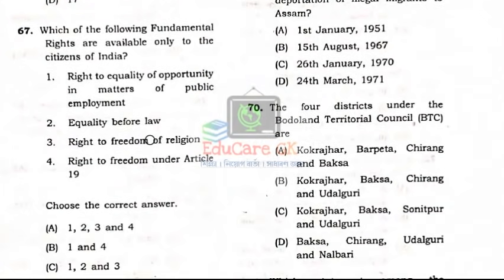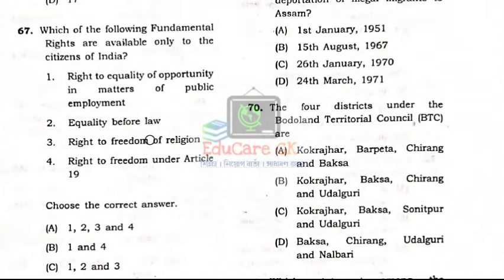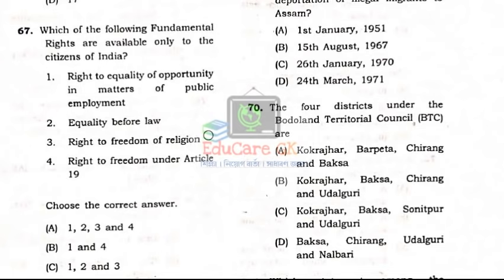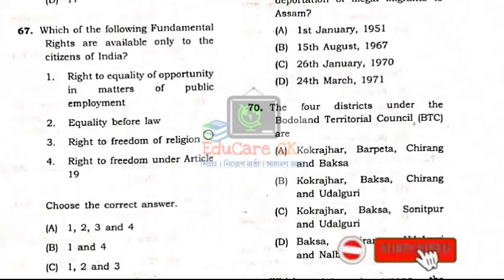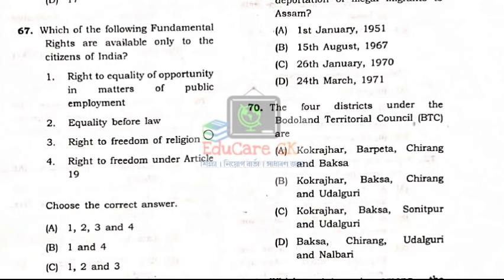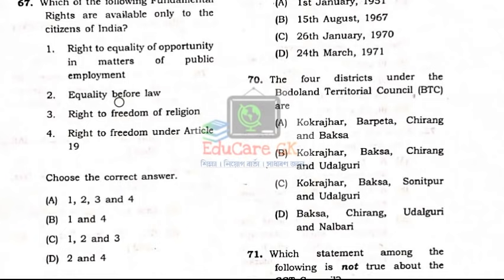Question Number 67: Which of the following fundamental rights are available only to the citizens of India? Right to equality in matters of public employment and freedom under Article 19. Option B is the correct answer: 1 and 4.